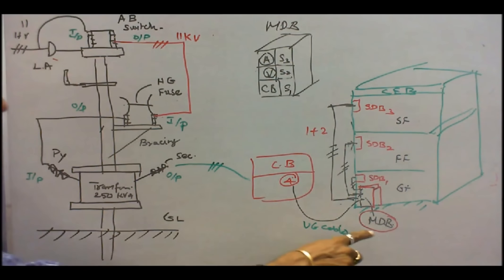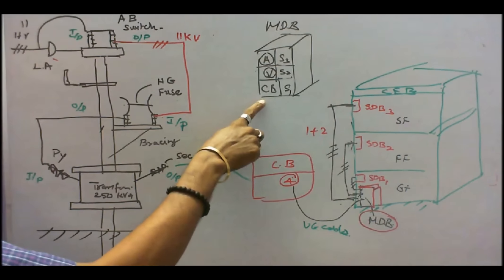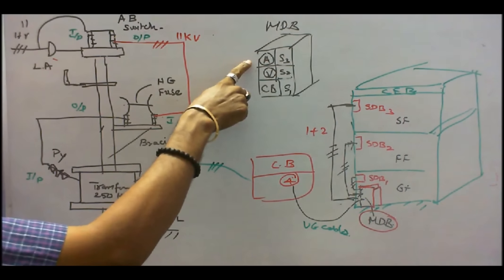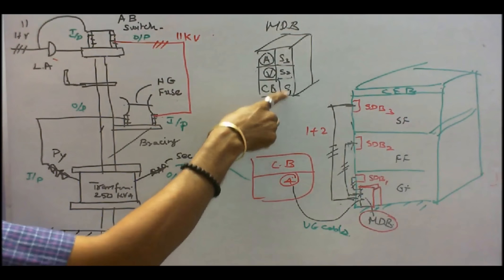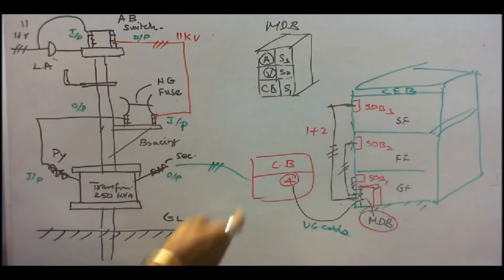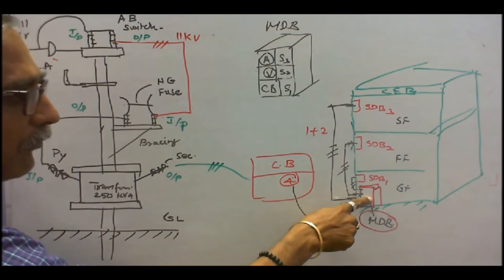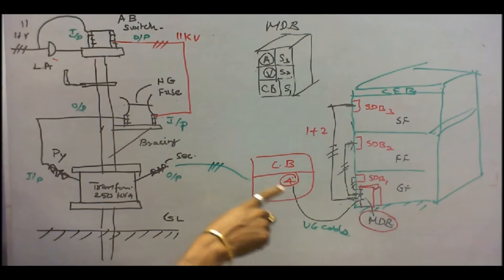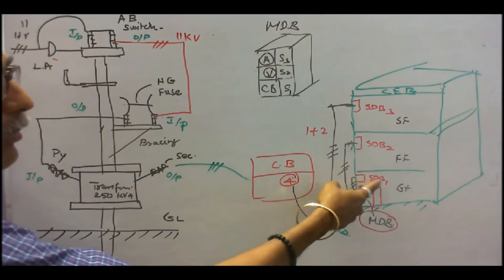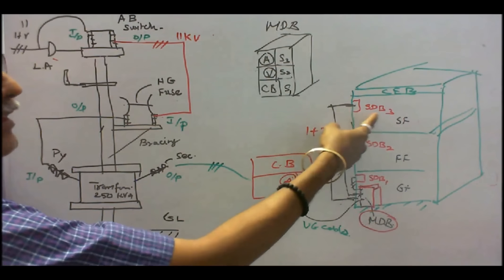The main distribution board is placed in the ground floor. Here the main distribution board acts as a distributor. In the main distribution board, I have a circuit breaker and panel board voltmeter and ammeter. And these are all the master control switches S1 for ground floor, S2 for first floor, S3 for second floor. Now, from the main distribution board, I am feeding power to the sub distribution boards, that is SDB1, SDB2 and SDB3.